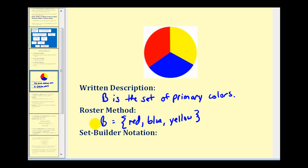Or using the set builder notation, set B would be equal to the set of X such that X is a primary color.